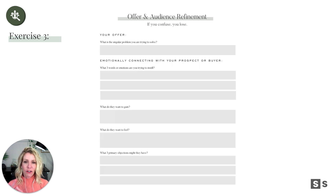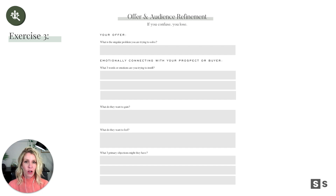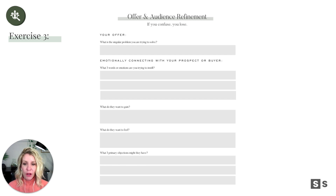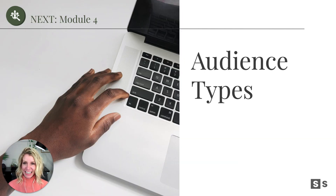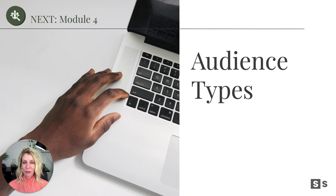And then finally, the offer and audience refinement piece. What is the problem you're trying to solve? How can you instill that sense of problem solved or transformation for that customer or prospect? What do they want to gain — what do they want to feel at the end of working with or buying from you? And what objections might they have that can further help you refine the offer or the copy and communications tools you'll use to sell them on it? Next up: module four, where we'll talk about the specific audience types we're going to create in Facebook Business Manager and then the other platforms.